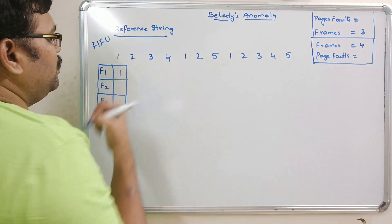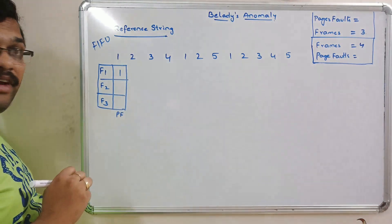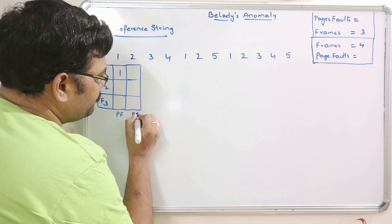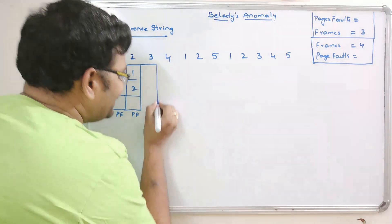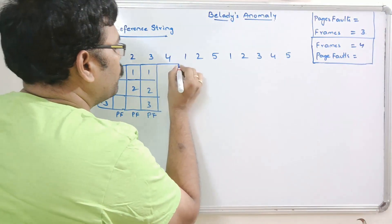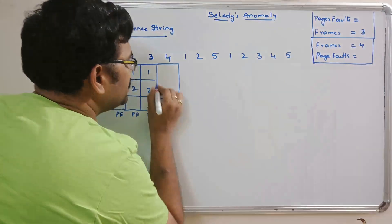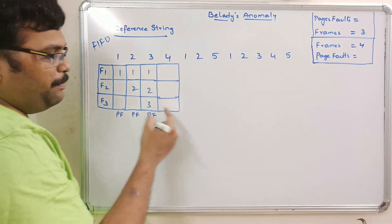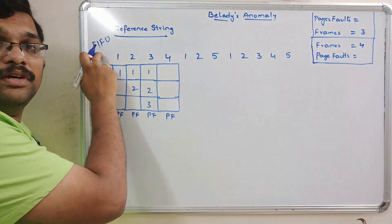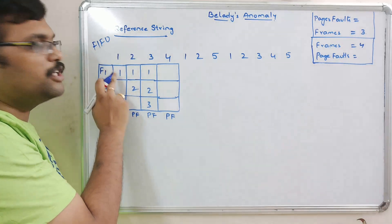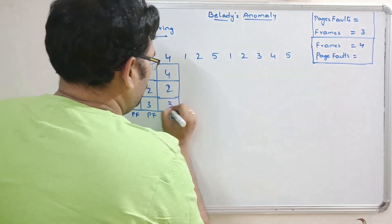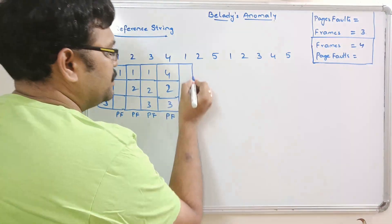Page 1 is placed in frame 1 — it's a page fault because page 1 is not available. Page 2 is also not available — another page fault. Page 3 is again not available — page fault. Page 4 is also not available, so we must replace. Using FIFO, page 1 is the first page loaded, so it is replaced with page 4.